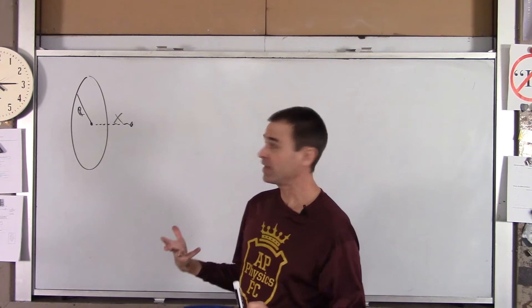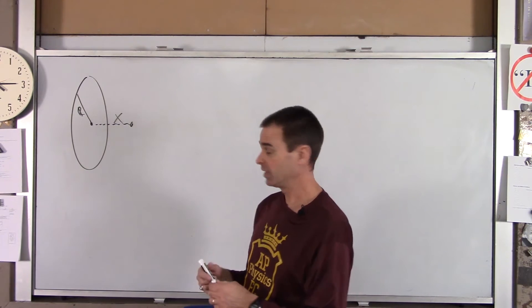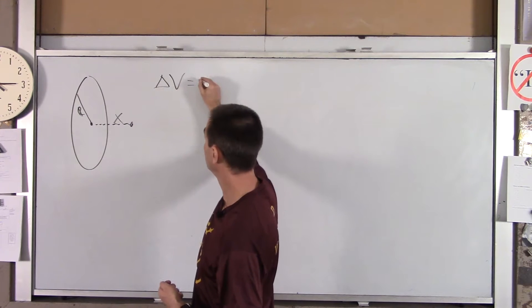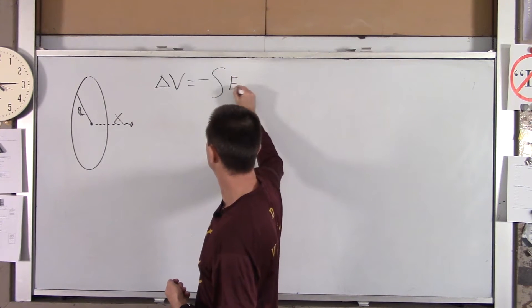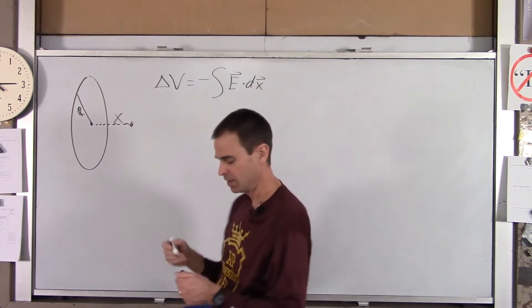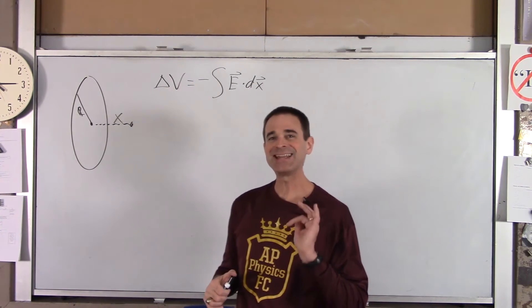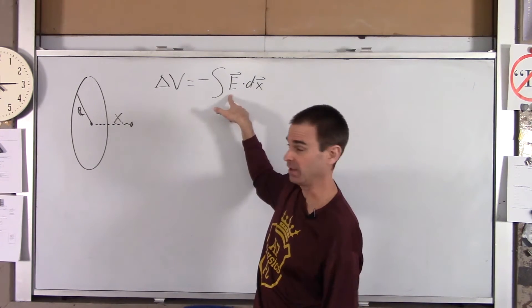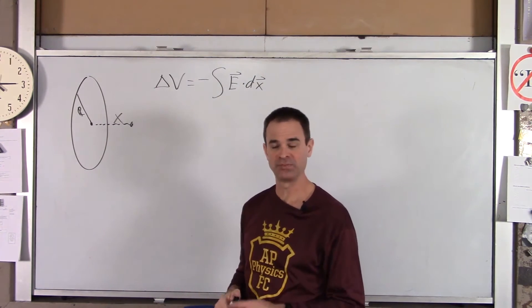Well, there's two ways to find voltage. One way is to say change in voltage equals negative the integral E dot D, in this case, DX. You can use that if you know the electric field created by the ring. Pop quiz. What's the electric field created by a ring?